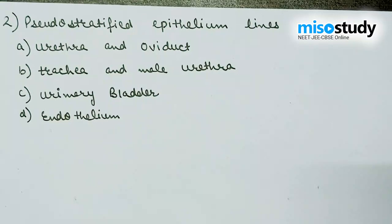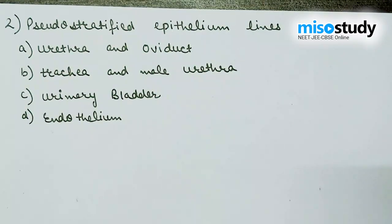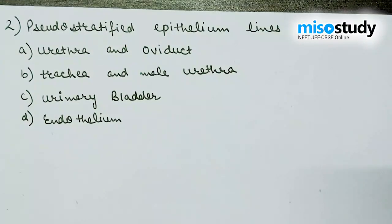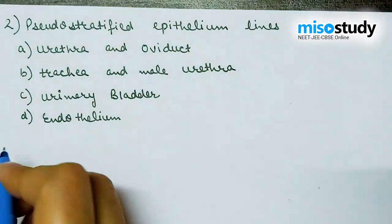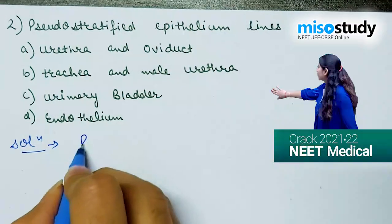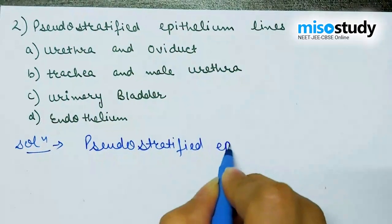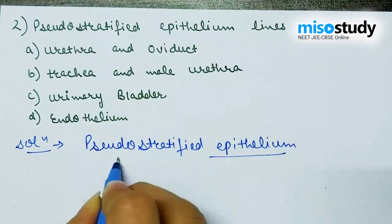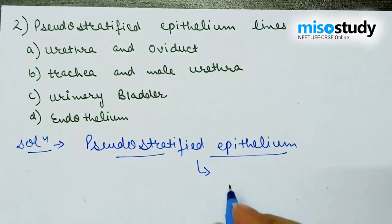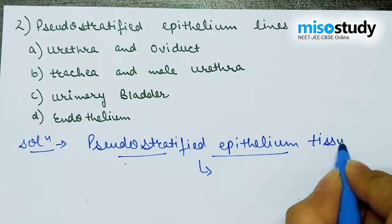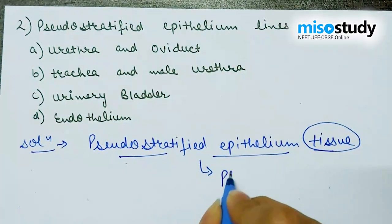Question two: pseudostratified epithelium lines which of the following? Options: A) urethra and oviduct, B) trachea and male urethra, C) urinary bladder, D) endothelium. When we discuss pseudostratified epithelium, first we need to understand what pseudostratified epithelium is — these tissues generally act as a protective structure.